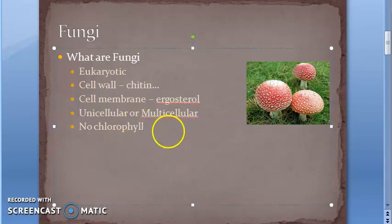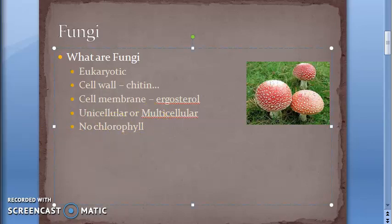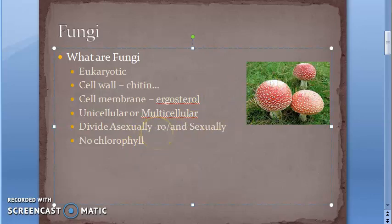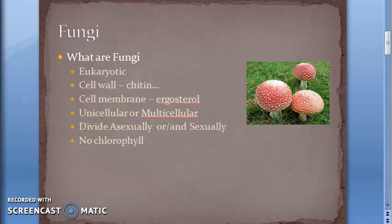Fungi have both asexual and sexual reproduction - they are like an in-between species, between bacteria and plants and animals. They can divide asexually and sexually. They have no chlorophyll, so they cannot make their own food.